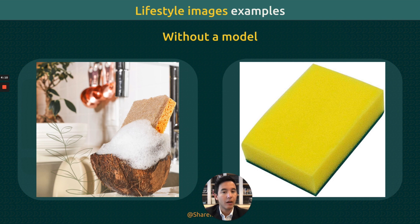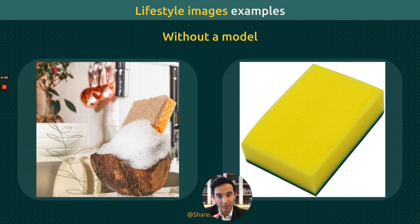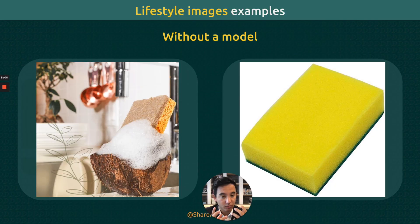Sometimes you'll have to use lifestyle images without a model, which is fine. What makes it effective then is the environment. For example, this sponge is an organic sponge. Instead of just saying it's made out of coconut and it's organic, we placed it inside a coconut. We have foam showing it's a cleaning utensil, we're in the kitchen, we have plants in the background, clean dishes, and you see the water. This tells a story — and if you tell the story, you're going to get the conversion. Clicks alone are not enough; you need that conversion, and the only way to showcase that connection is with emotional support from the images.